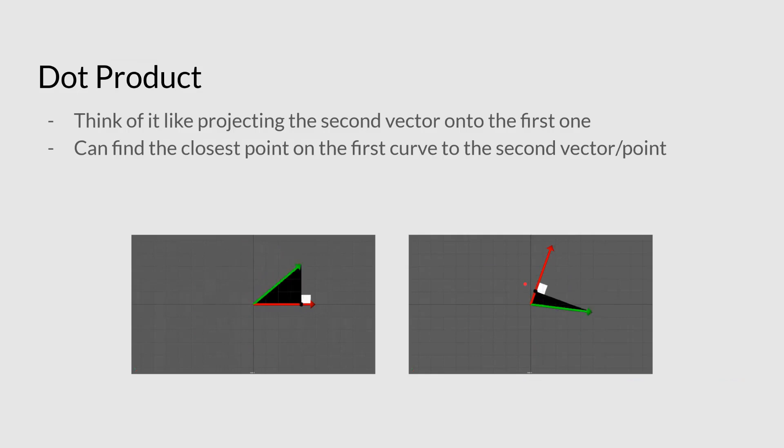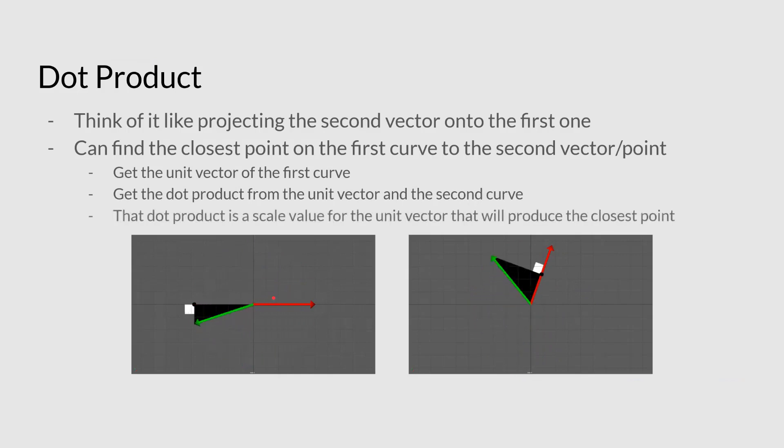So for this, just to kind of give you an idea of what's going on here, because this number that comes out here isn't a pure dot product value. This is actually finding the closest point on this vector here. Now, to do that, basically what I've had to do is, I have to get the unit vector of the first curve, I have to get the dot product from that unit vector and the second curve, and that dot product, that number, that singular number that I get back, is the scale value for the unit vector that will basically give me this point here.